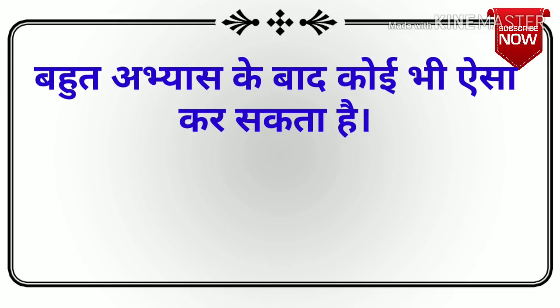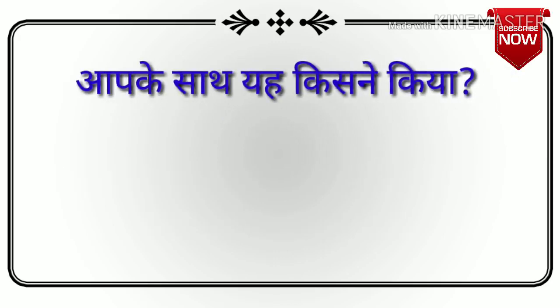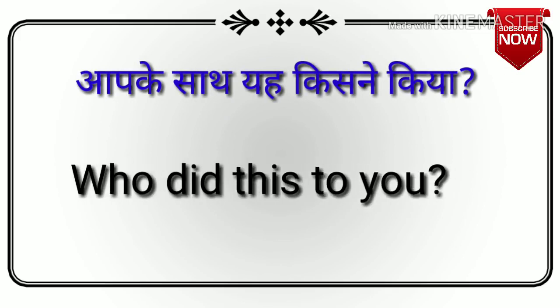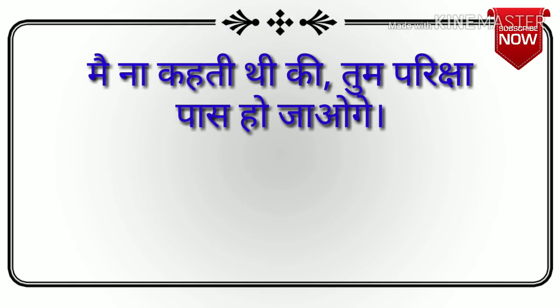Next sentence: बहुत प्रैक्टिस के बाद तो कोई भी ऐसा कर सकता है. — Anyone can do that after a lot of practice. Next sentence: आपके साथ यह किसने किया? — Who did this to you? Next sentence: ना कहती थी कि तुम परीक्षा पास हो जाओगे?